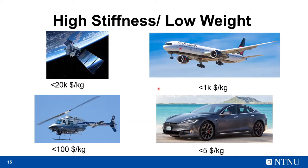For a space satellite, you save $20,000 per kilogram. For an aircraft, about $1,000 per kilogram. For a helicopter, about $100,000, and for a car less than $5,000. Where does it make the most sense? You'd expect a satellite, but actually it pays out most for aircraft — both in terms of volume production and savings per year.